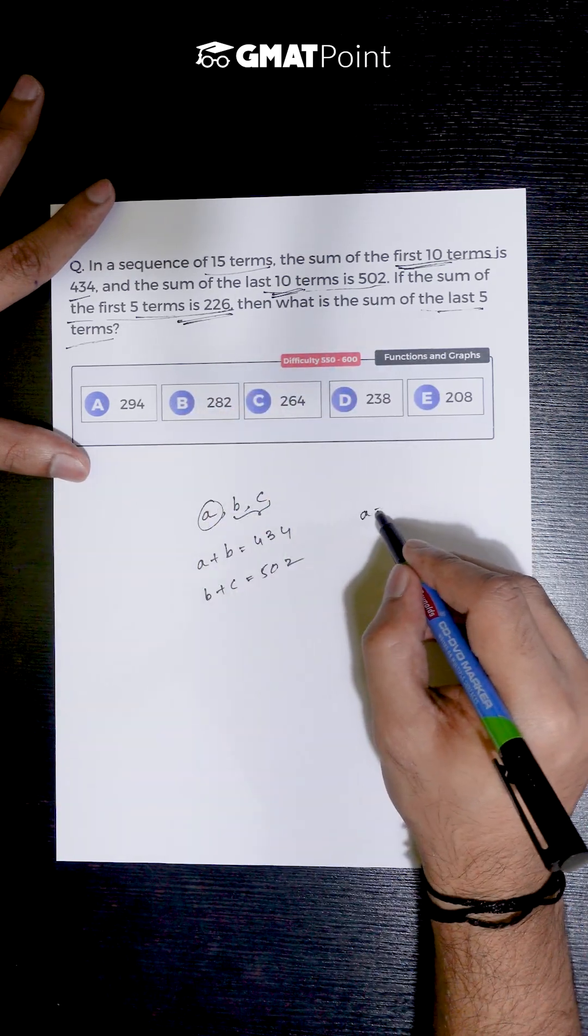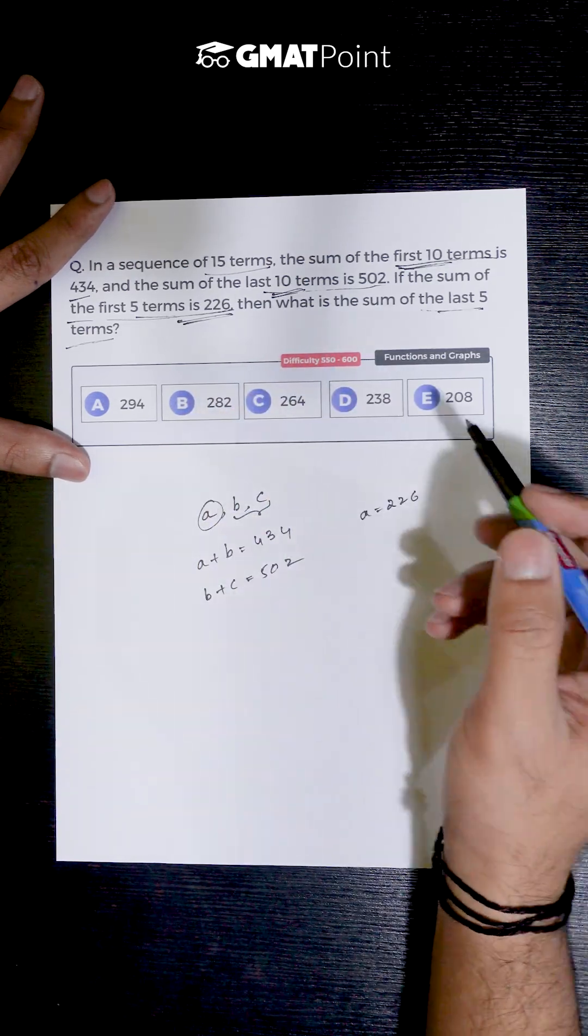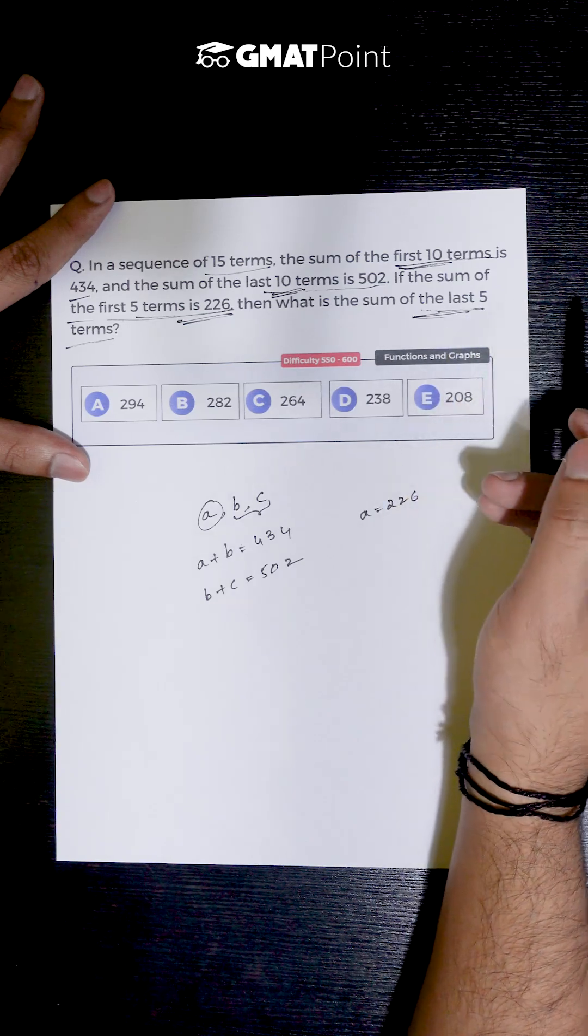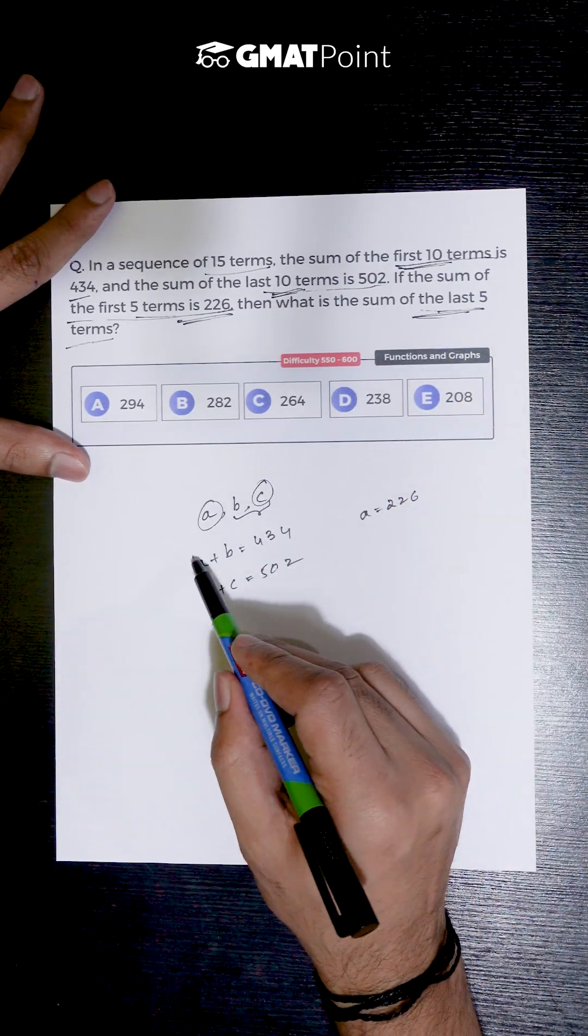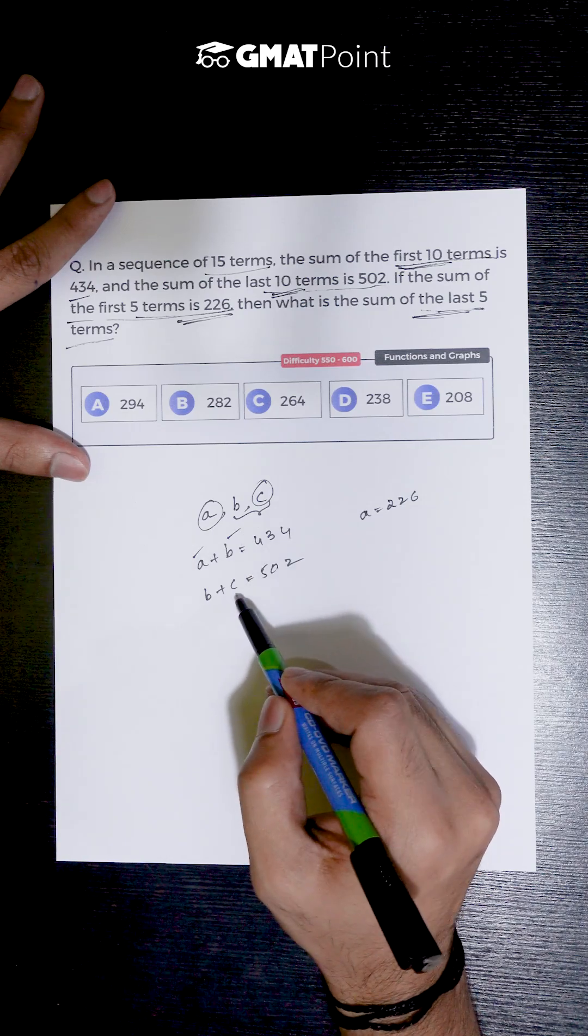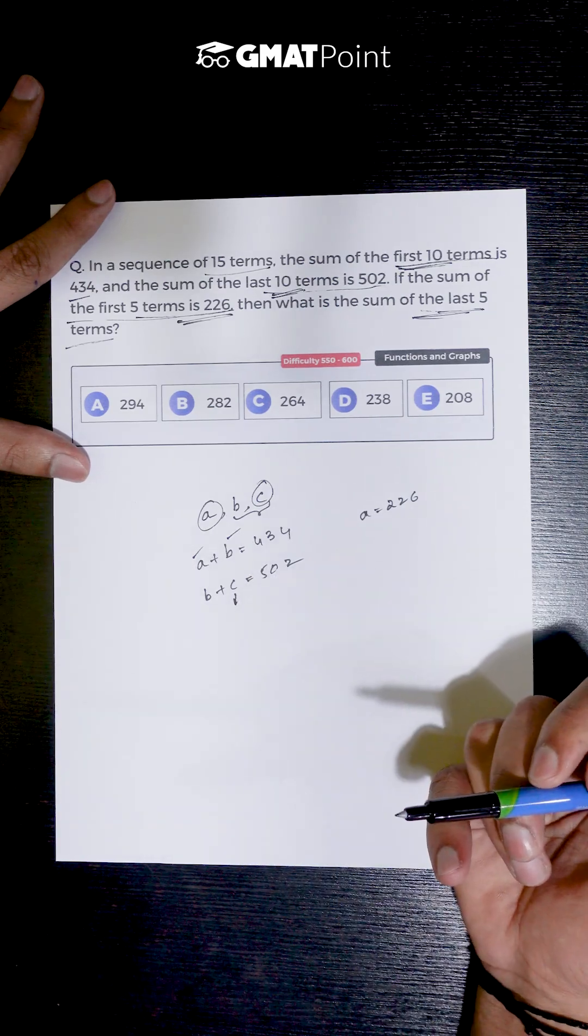So we are given the value of a to be 226 and asked to calculate the value of the sum of the last 5 terms, which is nothing but c. So we have the value of a, a plus b, and b plus c, and we are asked to calculate the value of c.